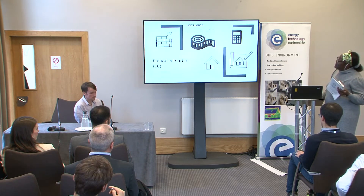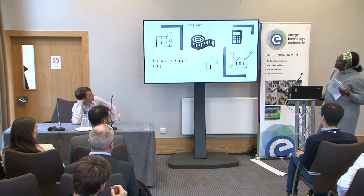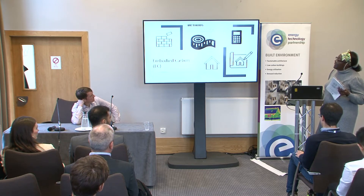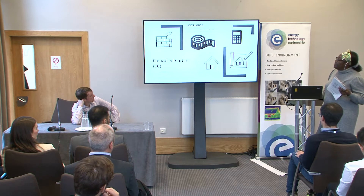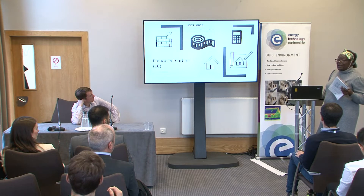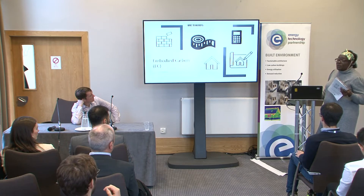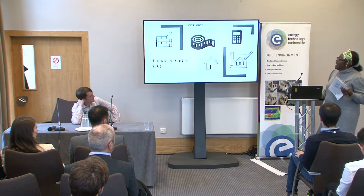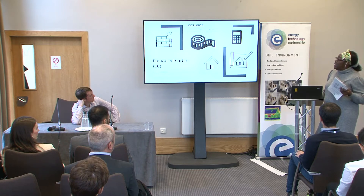Looking at how to get data from embodied carbon — because of the nature of building in Nigeria, a lot of materials are imported from China and India. Because of the energy problem, it is really difficult to get accurate data in this regard.